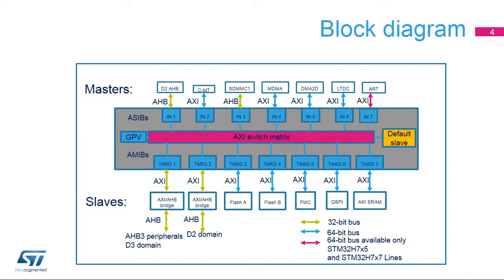Where an ASIBS or an AMIBS is connected to an AHB bus, it converts between the AHB bus and the AXI bus protocol. The AXI Interconnect includes a Global Programmer View, or GPV, which contains registers for configuring parameters such as the Quality of Service, or QoS level, at each ASIB. Any access to unallocated address space is handled by the default slave, which generates the return signals, ensuring that such transactions complete and do not block the issuing master and ASIB.